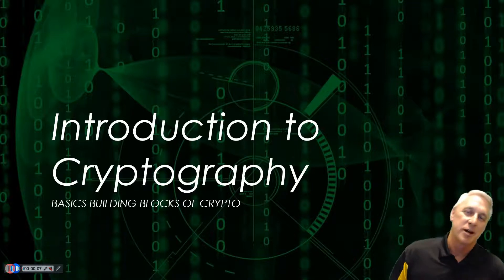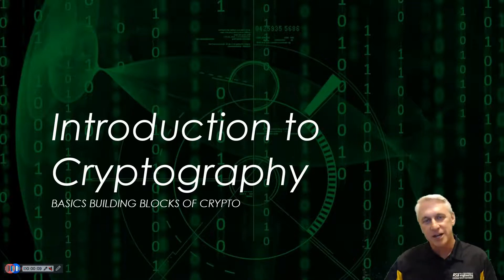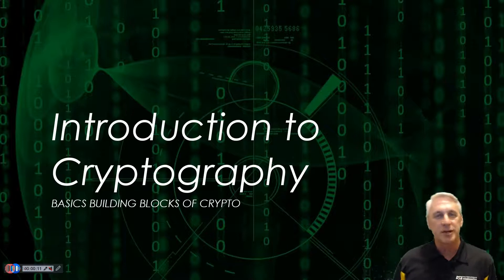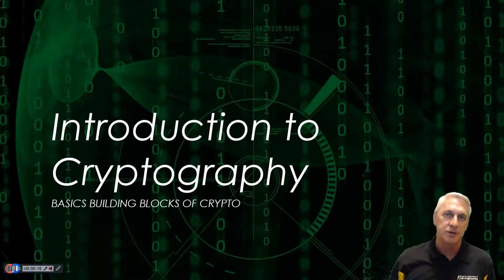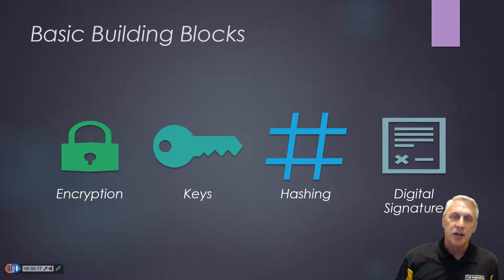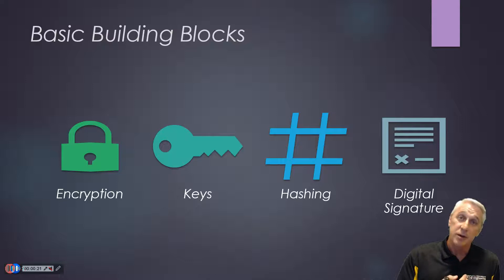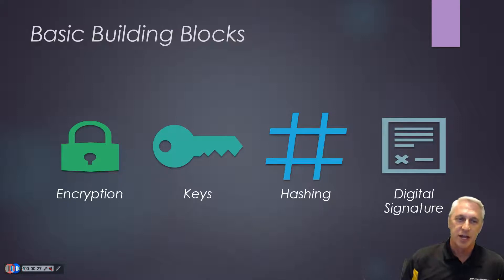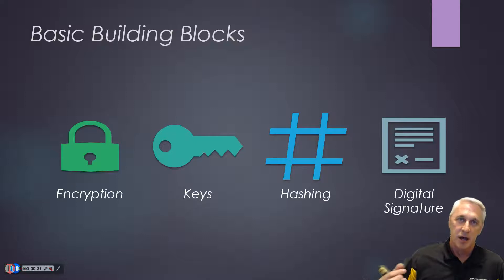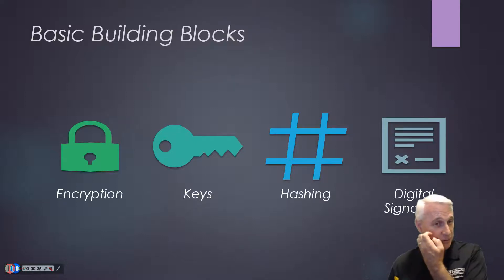Welcome. Today we're going to talk about cryptography and put together all the basic building blocks of how cryptography relates to anything in crypto. There are four major areas to cover: encryption, the keys process, hashing, and digital signatures — four components that are part of almost any blockchain system, whether public or private, and that also leads into cryptocurrency systems.